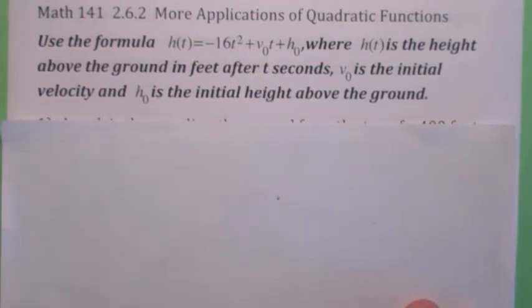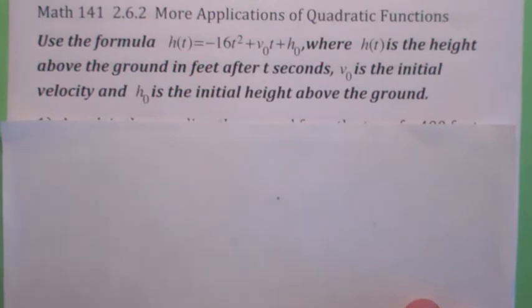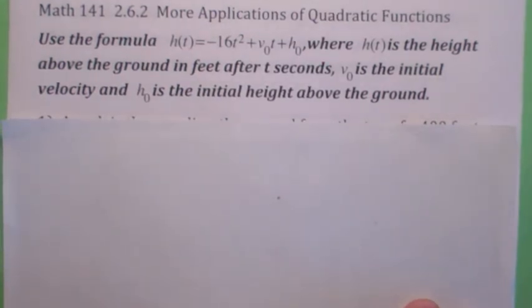Now v₀ is the initial velocity in feet per second, and that may be given, and there might be some problems where they ask you to find it. And then h₀ is the initial height. Again, maybe that might be given in the problem, or maybe you may actually have to find it. There might be some problems where they don't mention anything about the initial height, and it may be okay to infer that the initial height is zero.